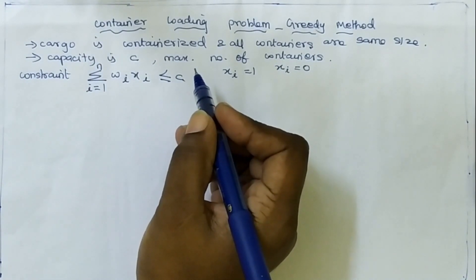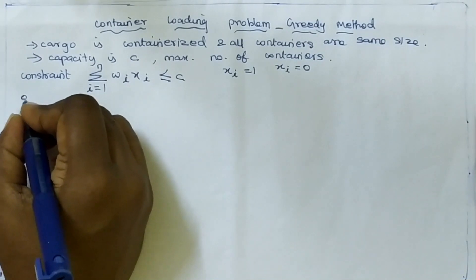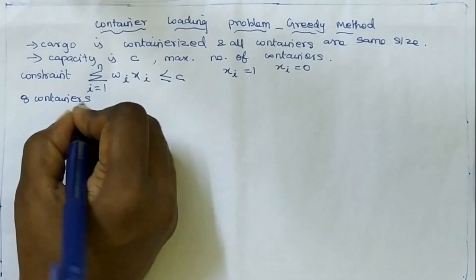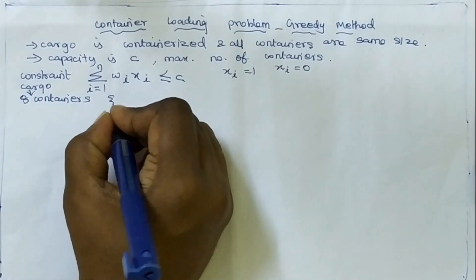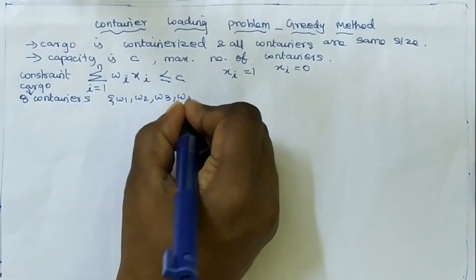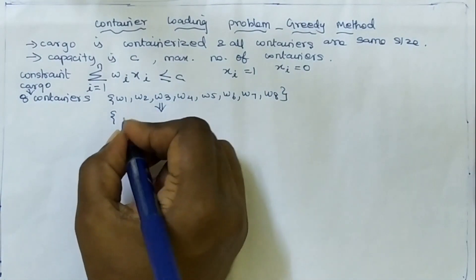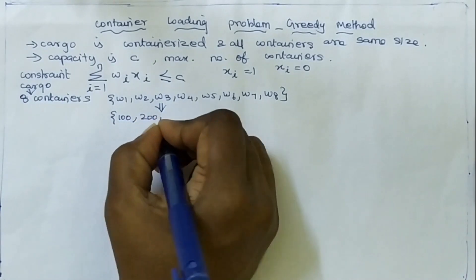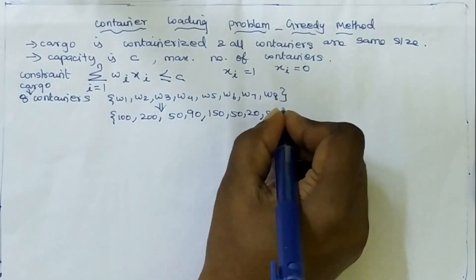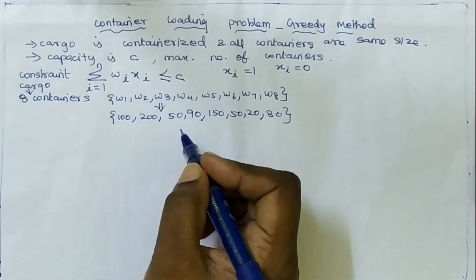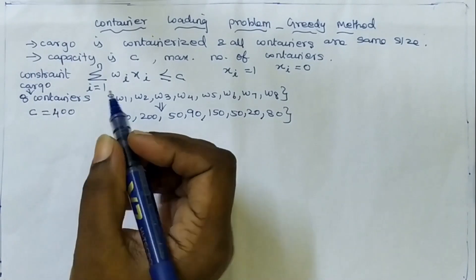Now we are going to solve the problem. The cargo contains 8 containers with weights w1 through w8. The weight values are 100, 200, 50, 90, 150, 50, 20, and 80. The capacity of the cargo is given as 400. Whenever a container is loaded into the ship, we have to check the constraint so that the total container weight does not exceed the cargo capacity.